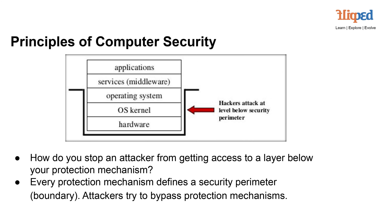Let's now transition into exploring the principles of computer security, starting with a visual representation of five layers: application, services, operating system, OS kernel, and hardware. These layers build upon each other to create a cohesive system. Crucially, attackers often aim to attack at a level below the security layer, seeking vulnerabilities in layers below where security mechanisms are in place.